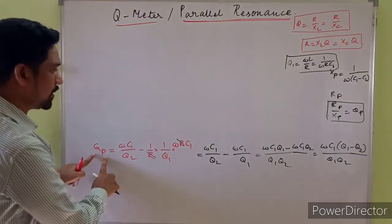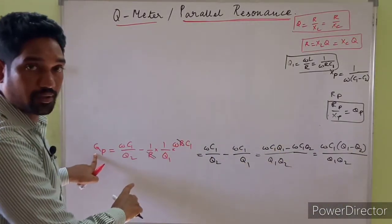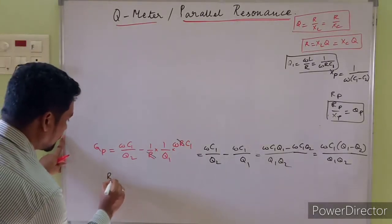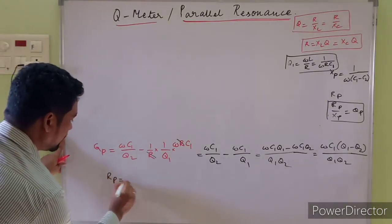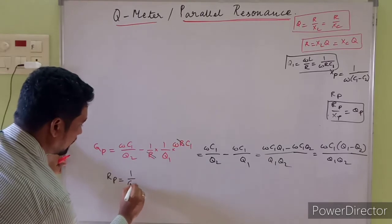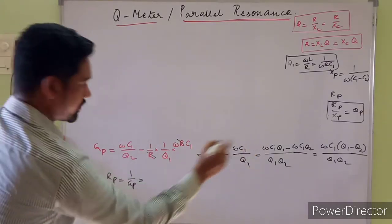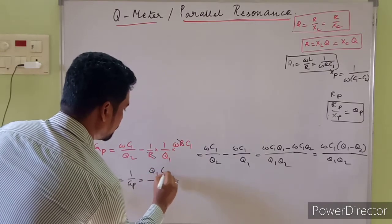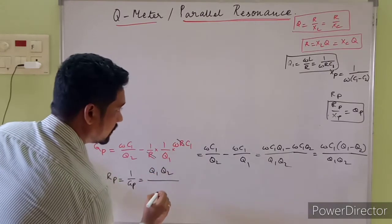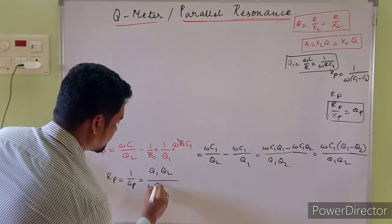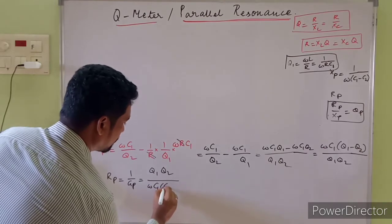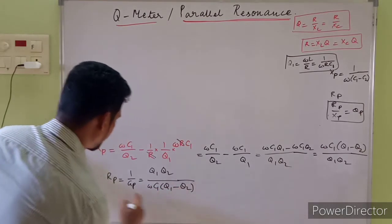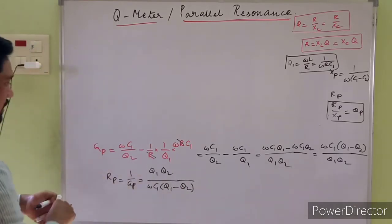This is the expression for GP. Our RP, which we are in search of, is the reciprocal: RP = 1/GP = Q1·Q2 / (ω·C1·(Q1 − Q2)). This is the expression for RP.